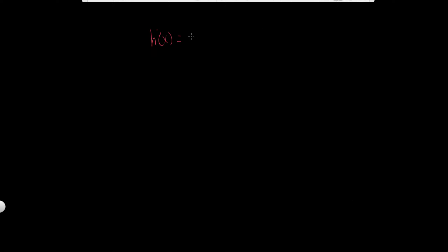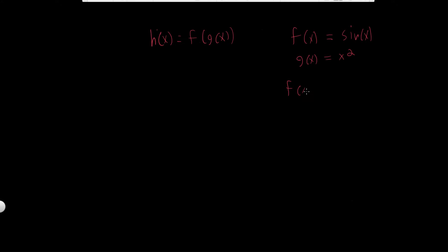In this video I want to discuss the chain rule. Let's say we have a function — we'll call it h of x — so h of x is equal to f of g of x. This is a composite function, which means a function is inside another function. For example, if f of x is sine of x and g of x is x squared, then f of g of x would be sine of x squared, because we substitute x squared wherever we see x in f of x.